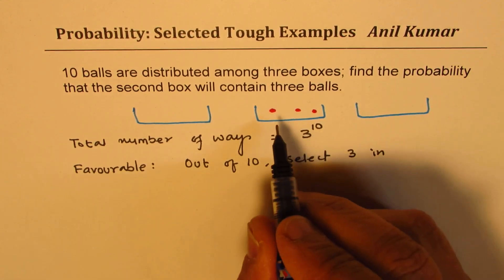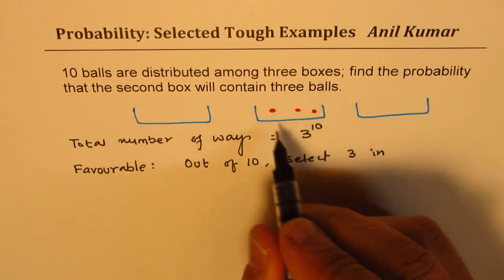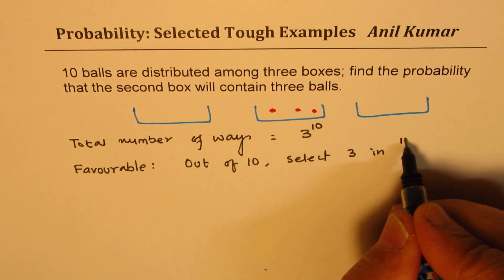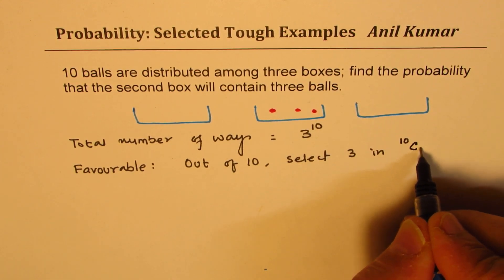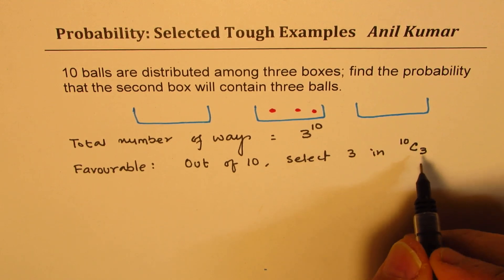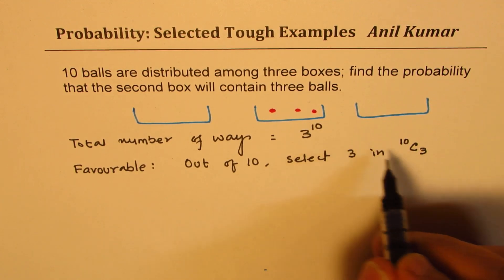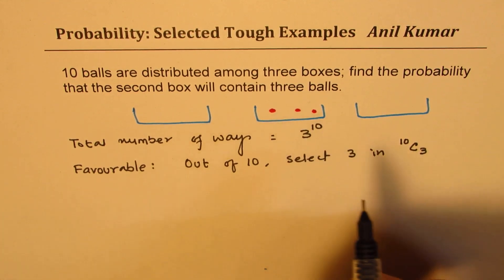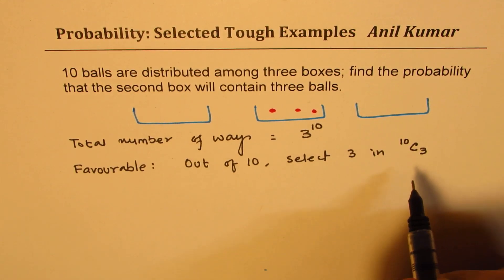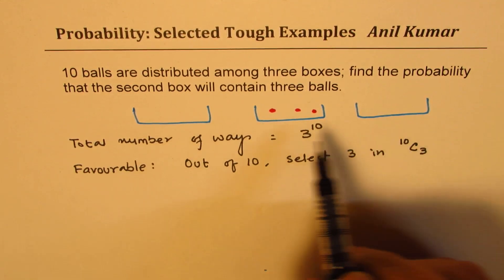That is because they are not distinct - any 3 can come. It is 10C3. So, these are the number of ways when you select 3 out of 10 for the second box. The rest can go into the other 2 boxes.